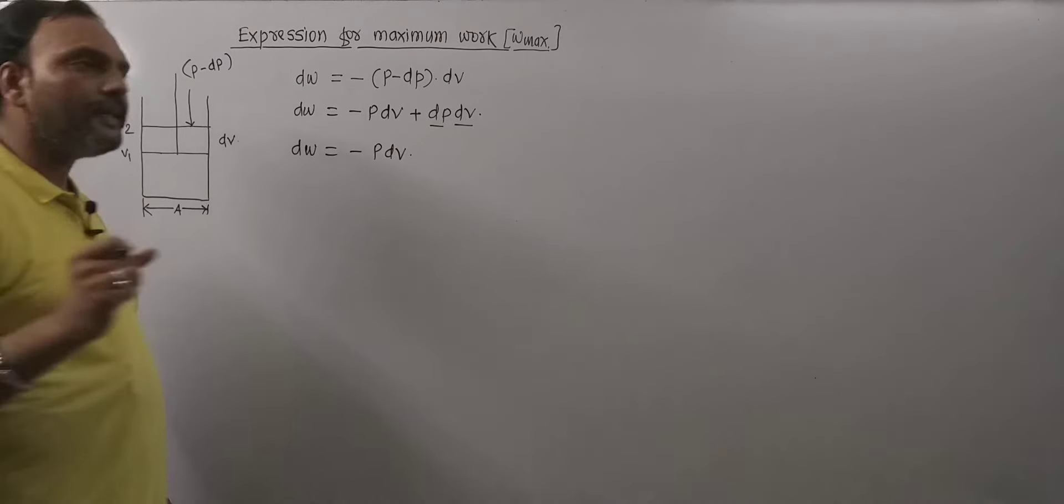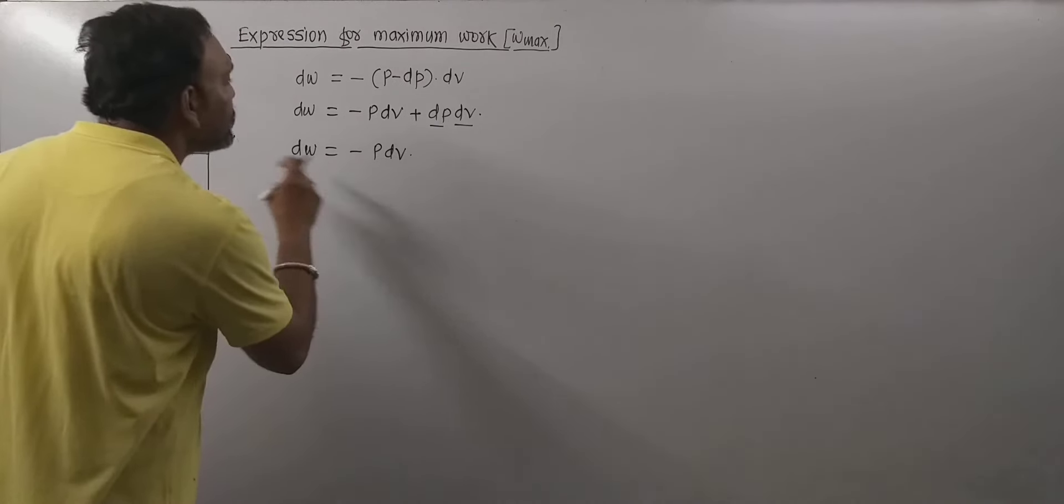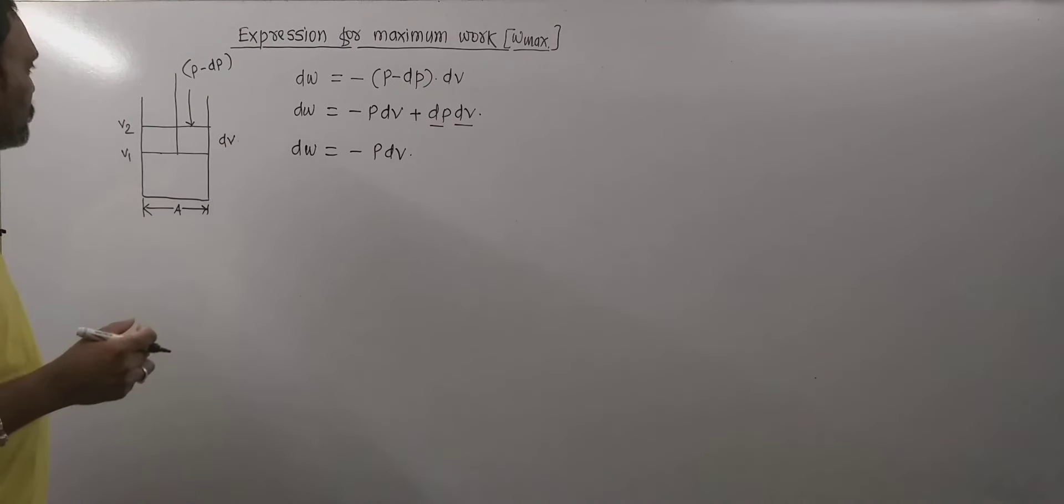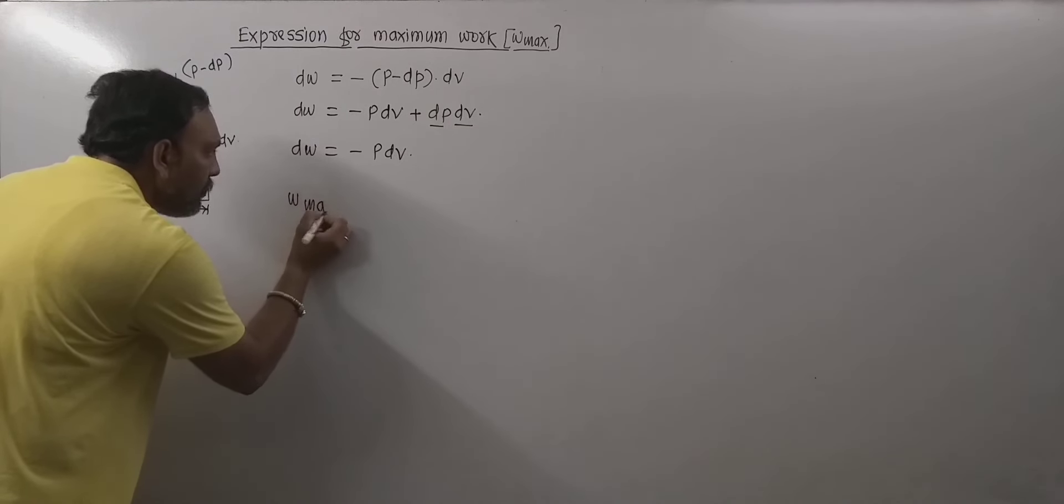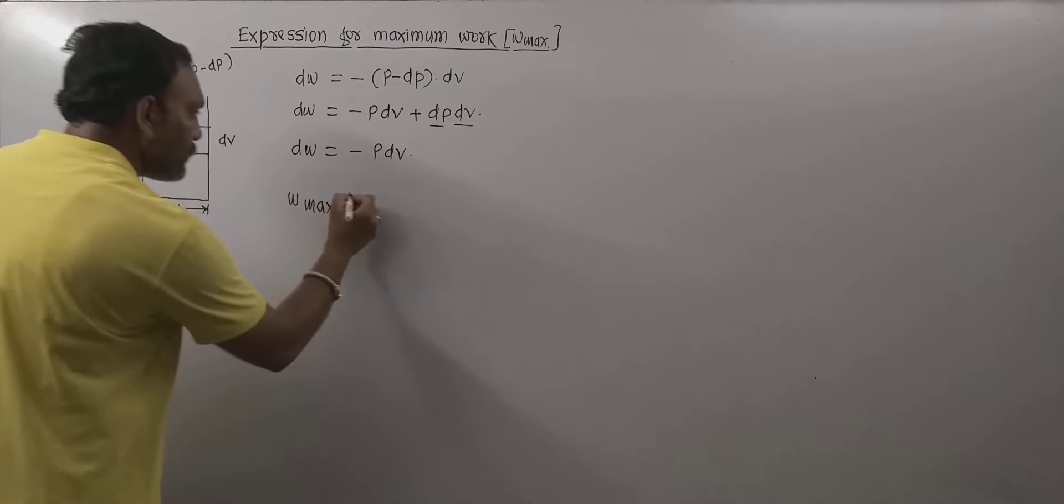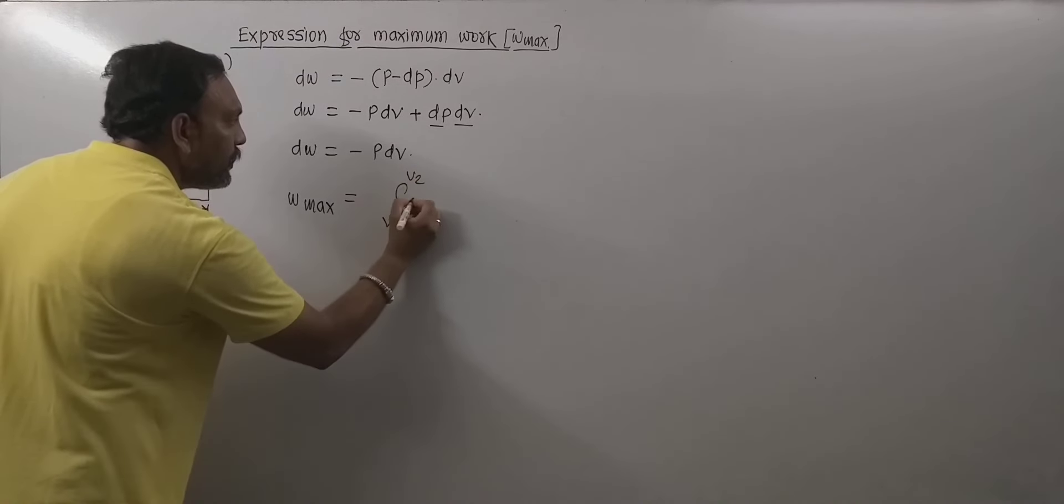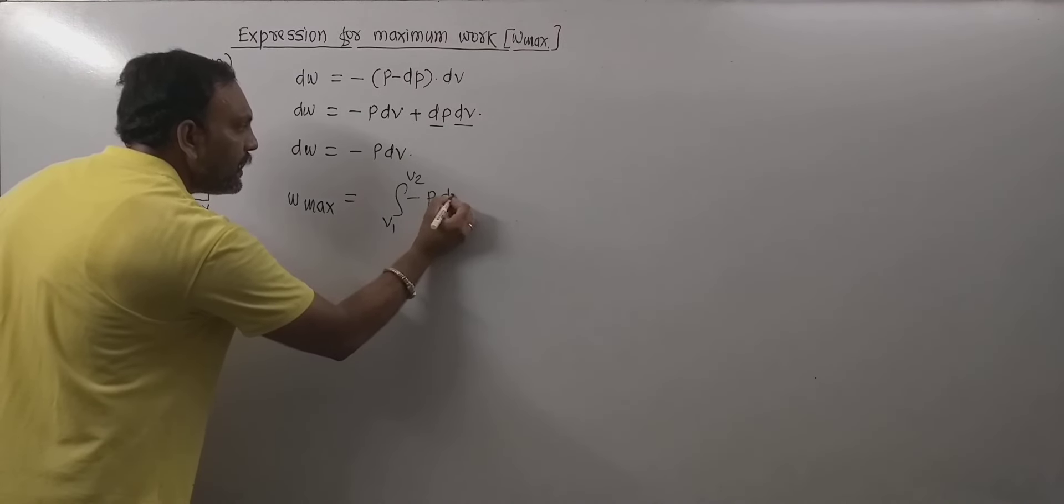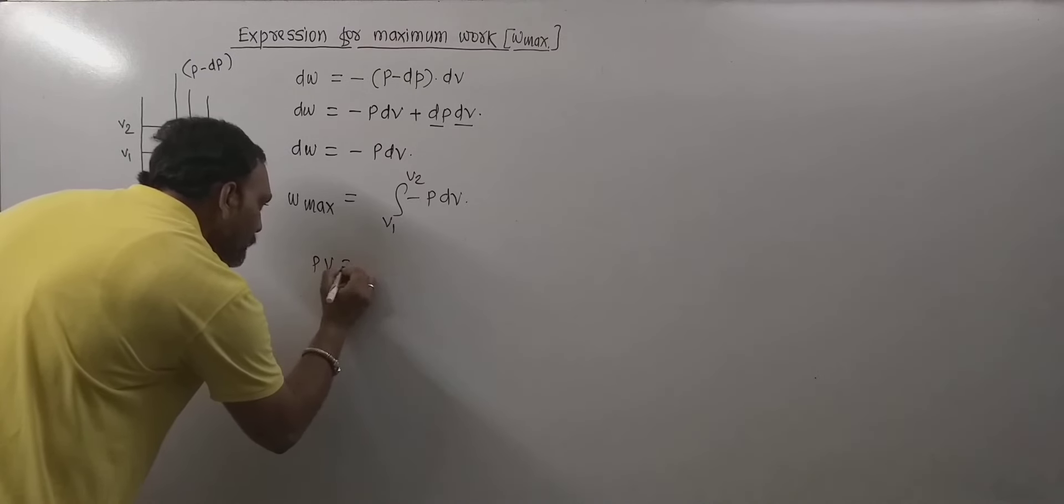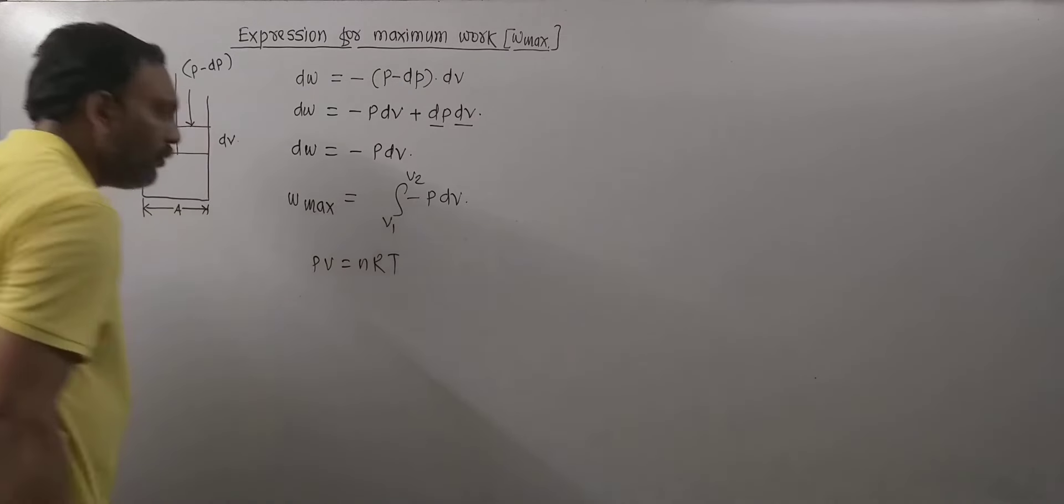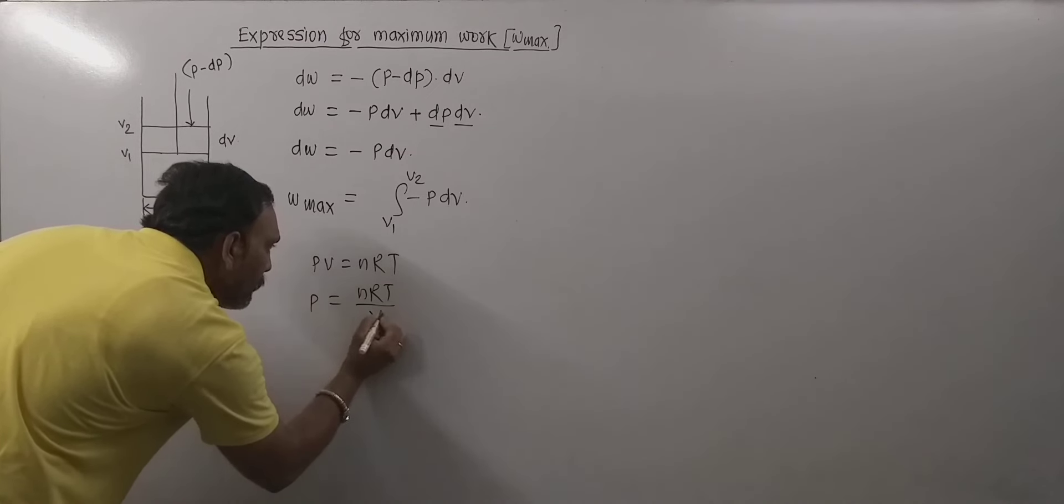Now we need to calculate the total maximum work, for that we need to integrate this equation between limits v1 to v2. So by integrating this we get total maximum work, that is w_max. So w_max equals integration between limits v1 to v2 of minus p dV. We know very well that pV equals nRT for n moles of gas. Thus p equals nRT upon V.